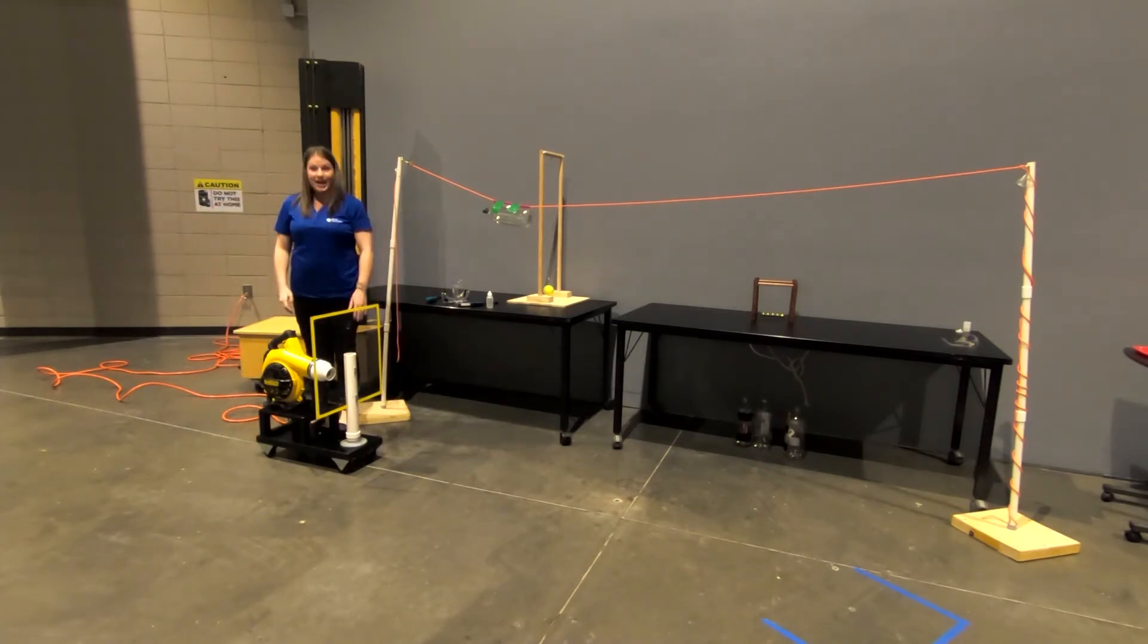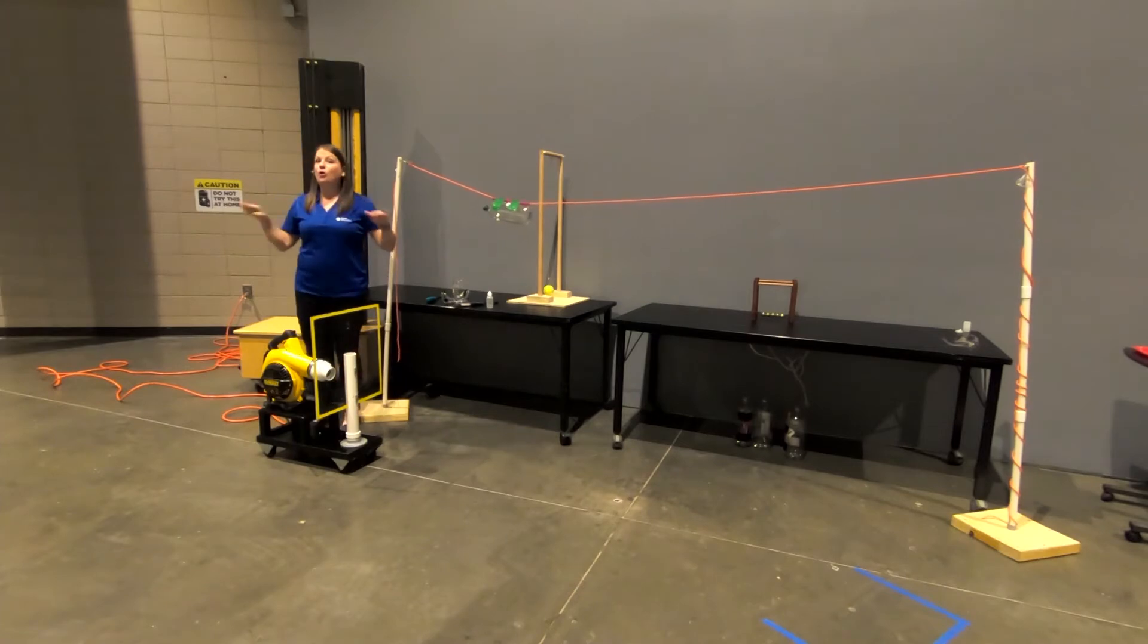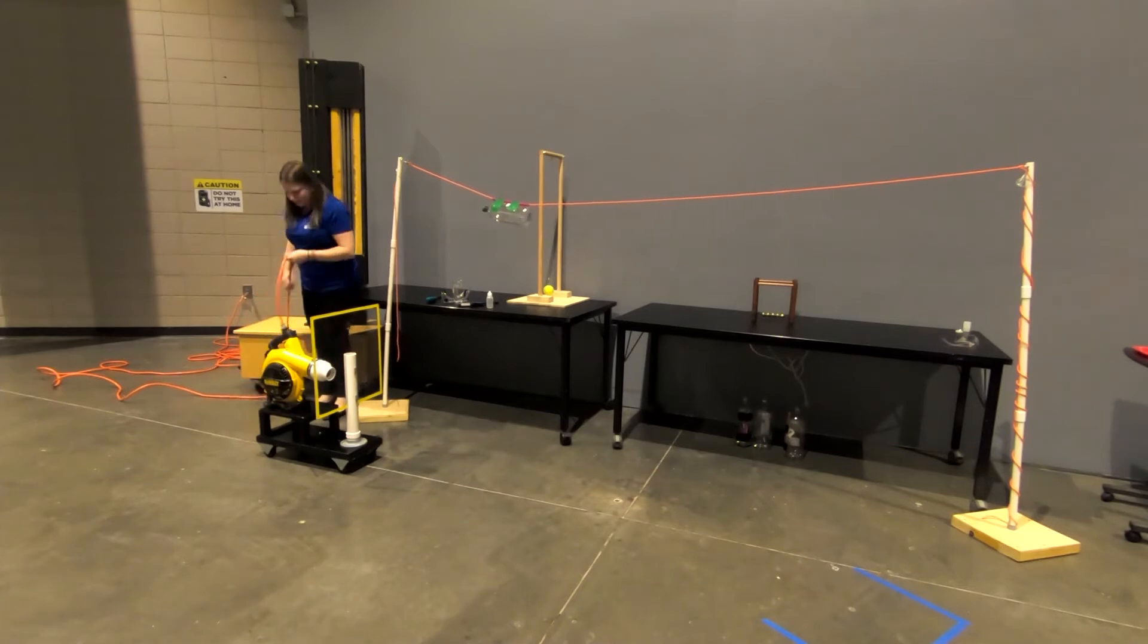So we're going to make a prediction now. And I want you to tell me, so now that I have this whole system, is our cart going to move forward that way, backward this way, or no movement at all? So which way will my cart move? So make your prediction. Does everyone have it? Let's find out. I'm going to step over to the side just in case it does go backwards. And we're going to go in three, two, one.